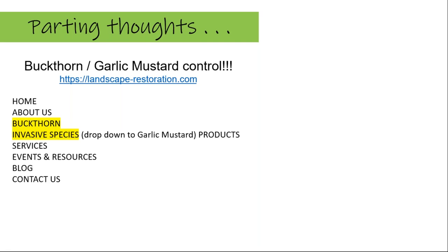Wrapping up — for buckthorn and garlic mustard, go to our website and on the home page you'll find the buckthorn tab and the invasive species tab, which has a dropdown for garlic mustard. The buckthorn article will help with identification and control methods. The garlic mustard article compares plants frequently confused with garlic mustard. The key thing to know is: if you're looking to have a native woodland and want to be part of this movement to help our environment, you have to control your invasive species.